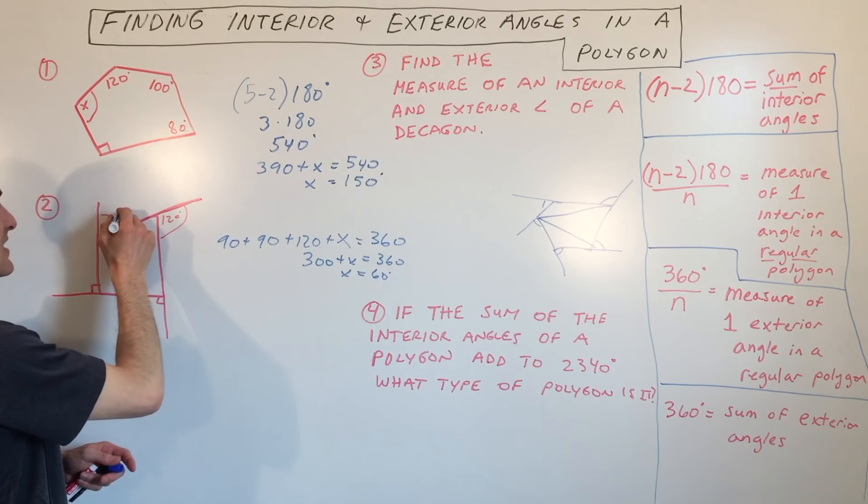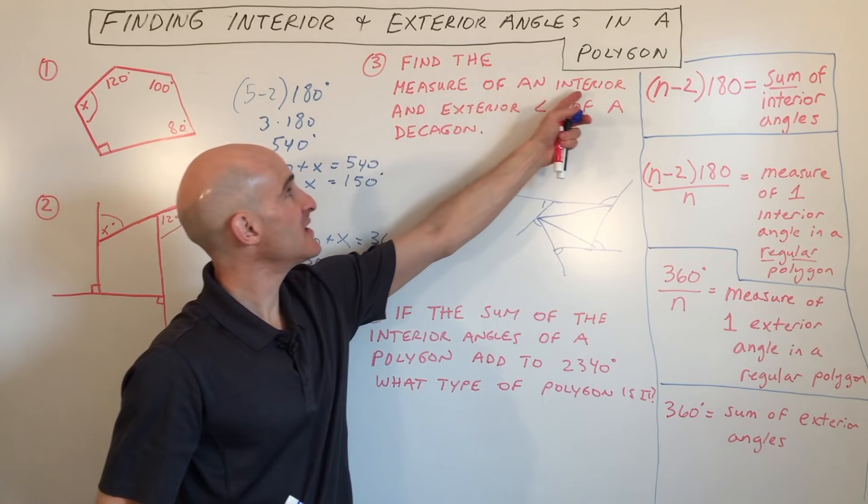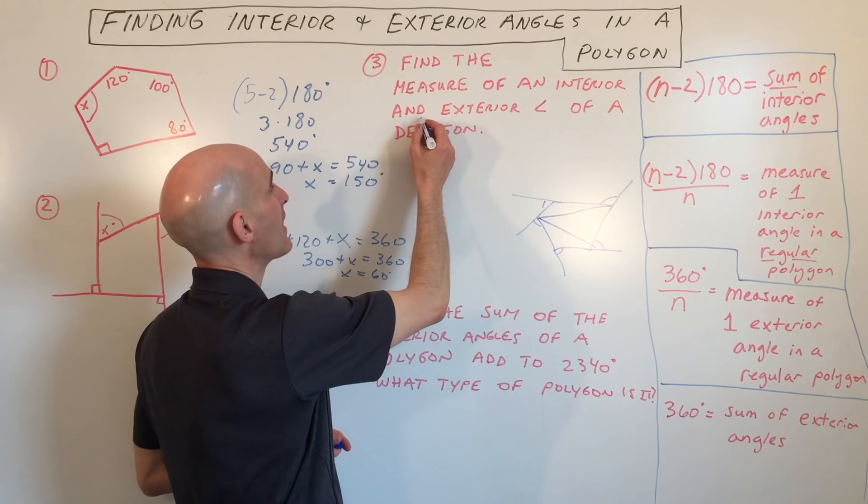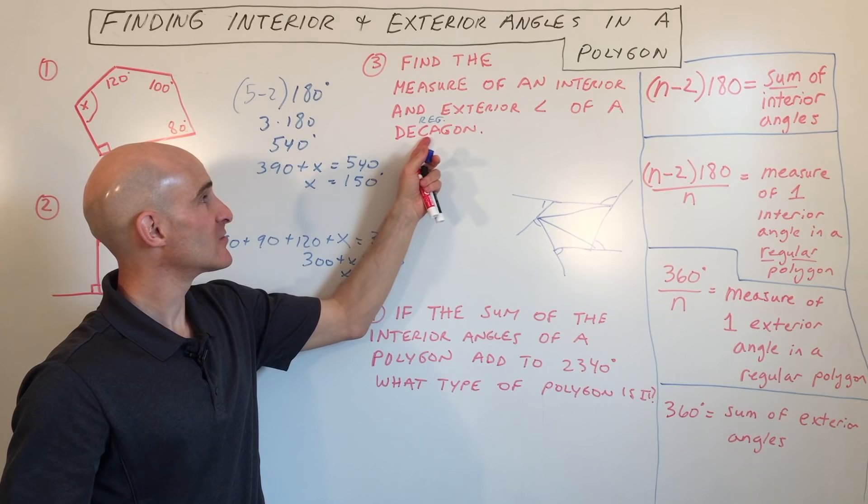Now the next one, find the measure of an interior and an exterior angle of a decagon. And what I meant to write here is a regular decagon, meaning all the angles and all the sides are the same. So a decagon is like decade, right? There's 10 years in a decade, there's going to be 10 angles in a decagon.